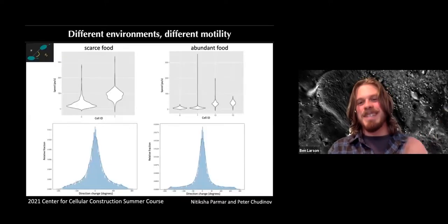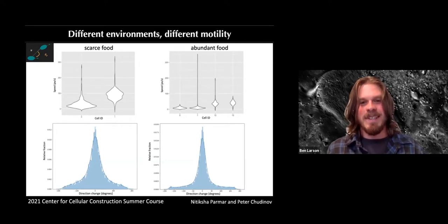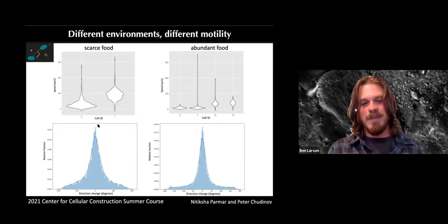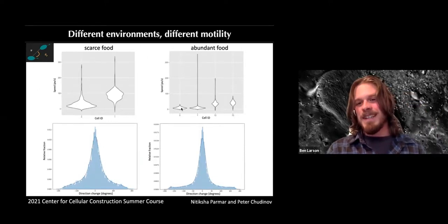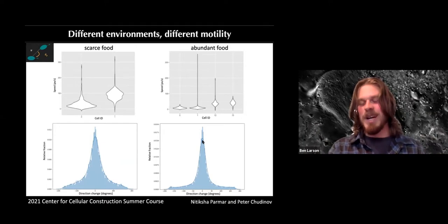This is some recent data from students in the Center for Cellular Construction summer course. What they found is that these cells actually do respond to food. These are plots of velocity distributions for individual cells and the distribution of changes in angle along cell trajectories — a persistence angle. In abundant food, cells tend to slow down and walk in straighter lines. So they are sensing and responding to food in their environment.